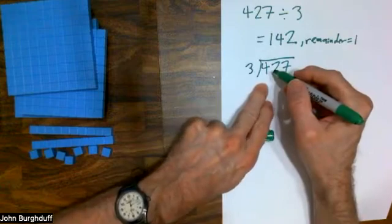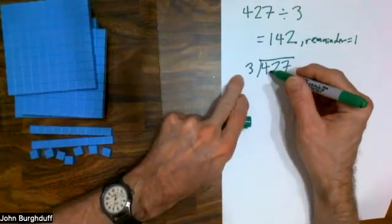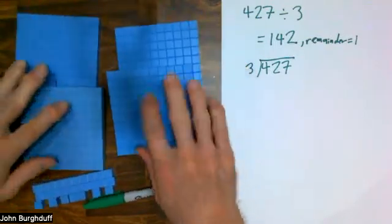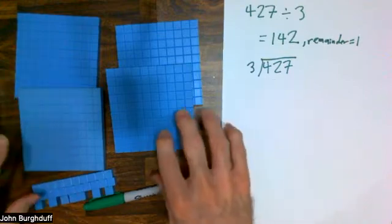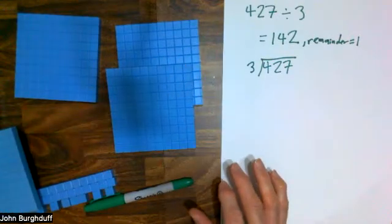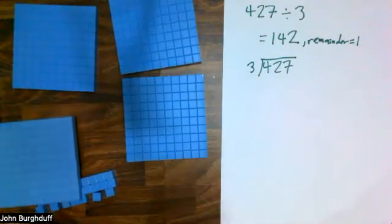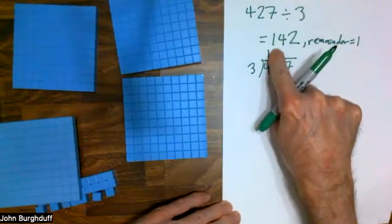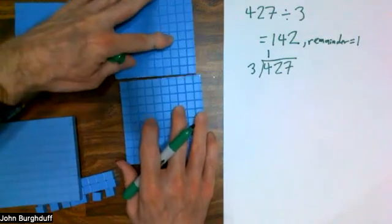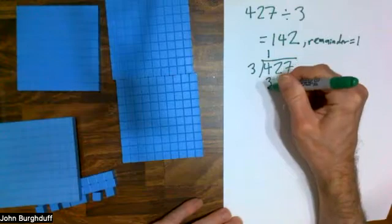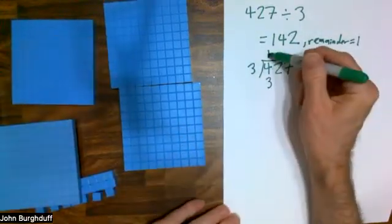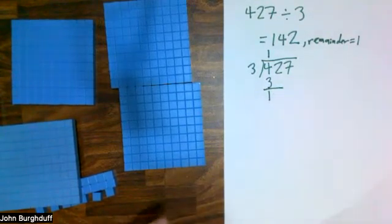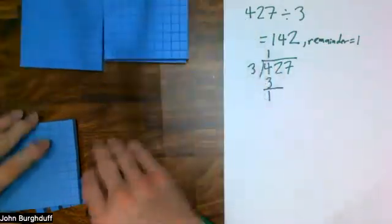What we usually say is: look just at the first digit of the dividend and ask yourself, how many times does 3 go into 4? What that's really saying is: take your four flats — that's the hundreds place — and how many would be in each pile if you created three piles? Well, if you made three piles, there would be one in each, with that one flat left over. Three goes into four one time. There are three flats in piles right now — that's 1 times 3 equals 3. Then we subtract the 4 and the 3, telling us we've got one flat left over.